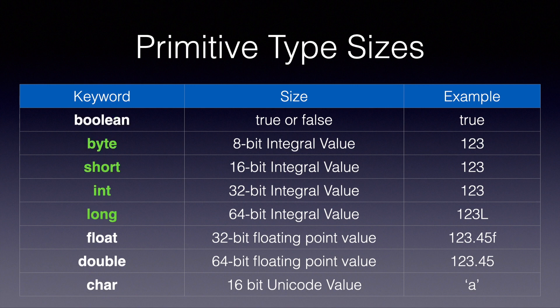The next four highlighted on the slide are byte, short, int, and long. A variable defined of these types can only store integral values. The difference between these types is only the size. Short can store a 16-bit integer, but byte can only store an 8-bit integer, so short can store a bigger number than byte. Similarly, int can store a bigger number than short and long can store bigger than int.